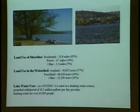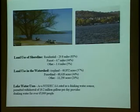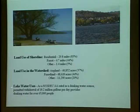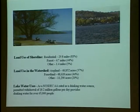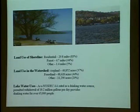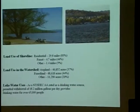Land use of the shoreline: residential is 29.8 miles — 83% of the shoreline is residential. Forest land is about 44%. Land use in the watershed: cropland, we have about 4,000 acres of agricultural land. Lake water uses: as a New York State DEC AA rated drinking water source, it is permitted withdrawal of 18.2 million gallons per day, providing drinking water for over 65,000 people in five municipalities including the City of Canandaigua, villages of Newark, Palmyra, Rushville, and the Town of Gorham.